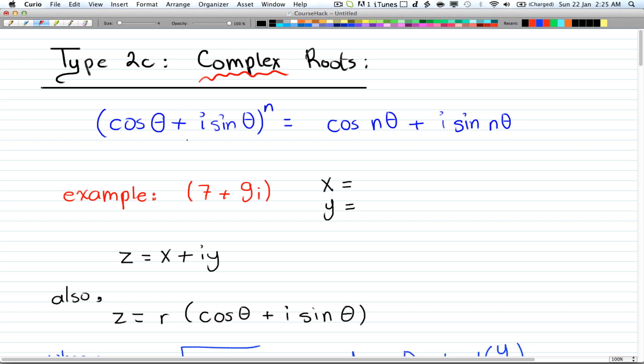So the first thing we're going to look at is this formula here. It says that if you have (cos θ + i sin θ)^n, that can be rewritten as cos(nθ) + i sin(nθ). All that's happening is the n is coming before the theta, so you just drop it in here and there.